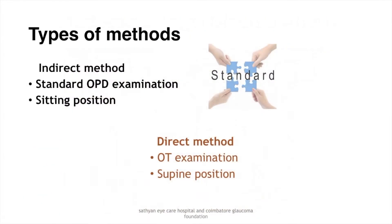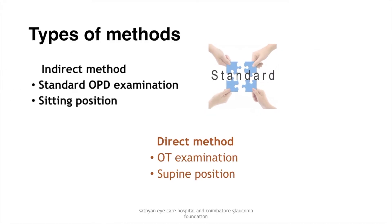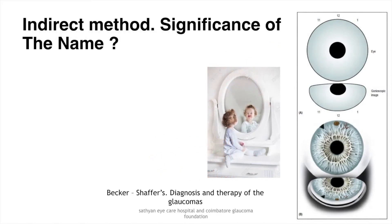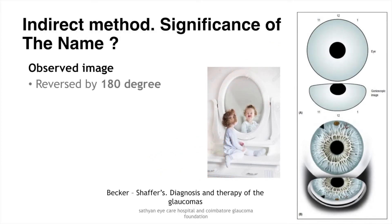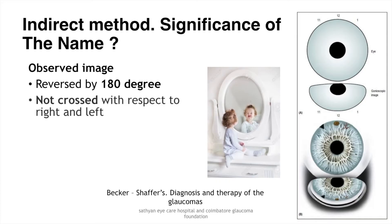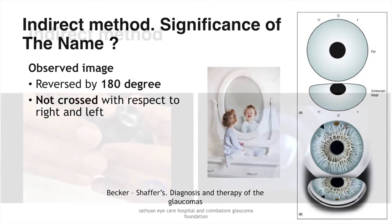The standard method of performing gonioscopy is an indirect one. The observed pigment in the eye at 12 o'clock is reversed by 180 degrees to 6 o'clock, but the PA on the left side is not crossed and remains on the left in the gonio mirror as well.